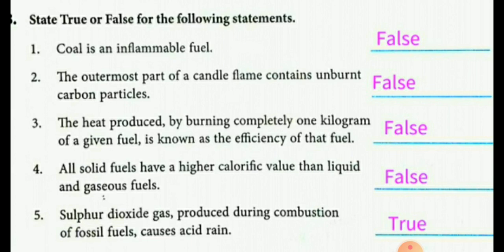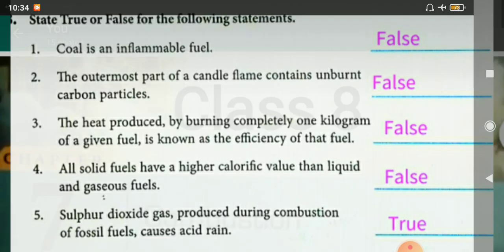Sulfur dioxide gas produced during combustion of fossil fuel causes acid rain — that is true.